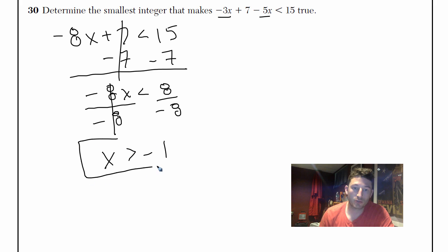So here's the nice situation we got to. We know that x, or our number, has to be bigger than negative 1. So determine the smallest integer. Well, on the number line, I mean, I'm doing a little extra here.